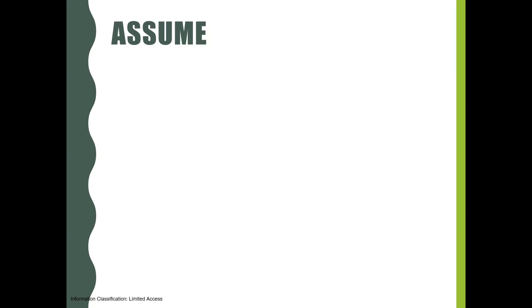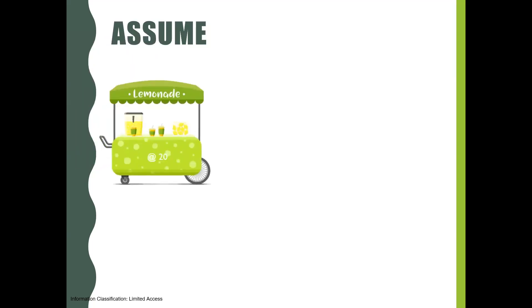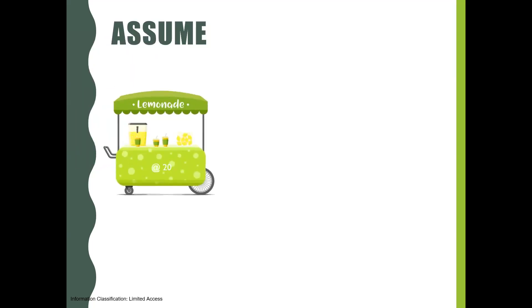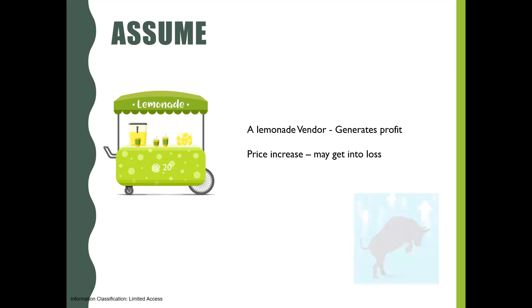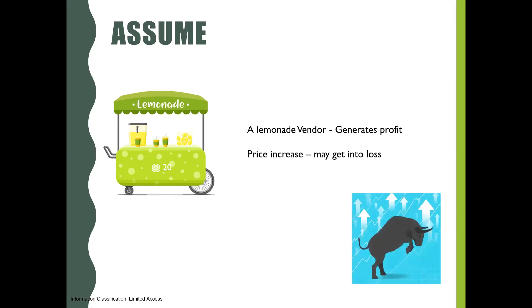Let's understand this with an example. Assume there is a lemonade vendor who sells lemonade at 20 rupees per cup and is able to generate profits per day. He is afraid that if the price of the lemon increases, he will have to increase the price of lemonade and that might reduce his sale. So what is his view about the market? Yes, he is bullish about the market.